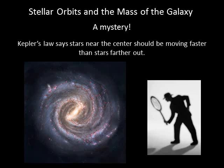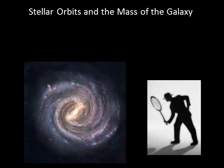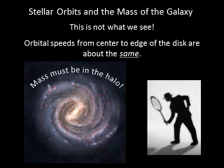Studying orbital motions of stars in our galaxy has revealed a mystery. Photographs of galaxies show that most of their mass is concentrated near their centers. According to Kepler's laws, this would mean that the stars closest to the center should be moving faster than the stars farther out. But this is not what we see — the orbital speeds remain about the same out to great distances from the galactic center. This tells us that most of the galaxy's mass must reside far from the center and is distributed throughout the halo.